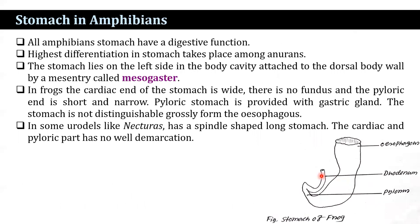In amphibians, all stomachs have a digestive function, and the highest differentiation takes place among anurans. The stomach lies on the left side of the body cavity, attached to the dorsal body wall by a mesentery known as the mesogaster. In frogs, the cardiac end of the stomach is wide, there is no fundus, and the pyloric end is short and narrow. The pyloric stomach is provided with gastric glands. In some urodeles like Necturus, there is a spindle-shaped long stomach, and the cardiac and pyloric parts have no clear demarcation.